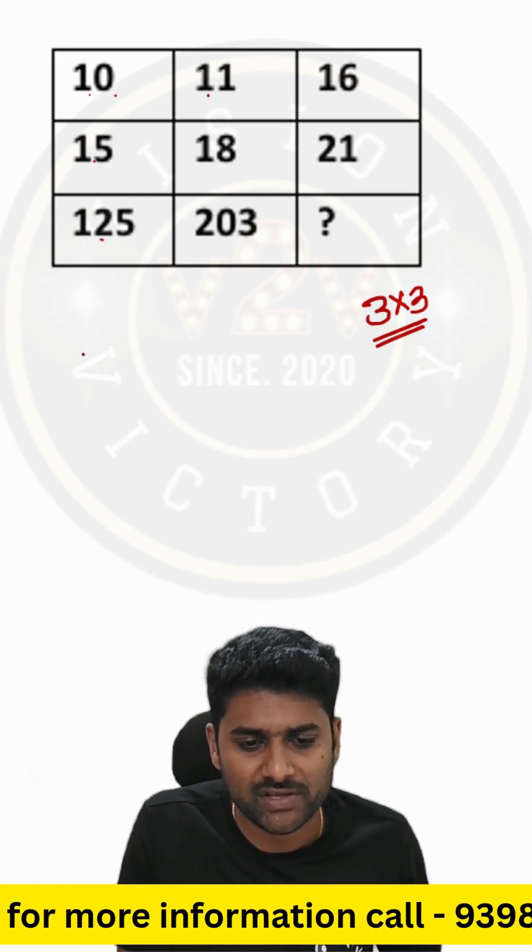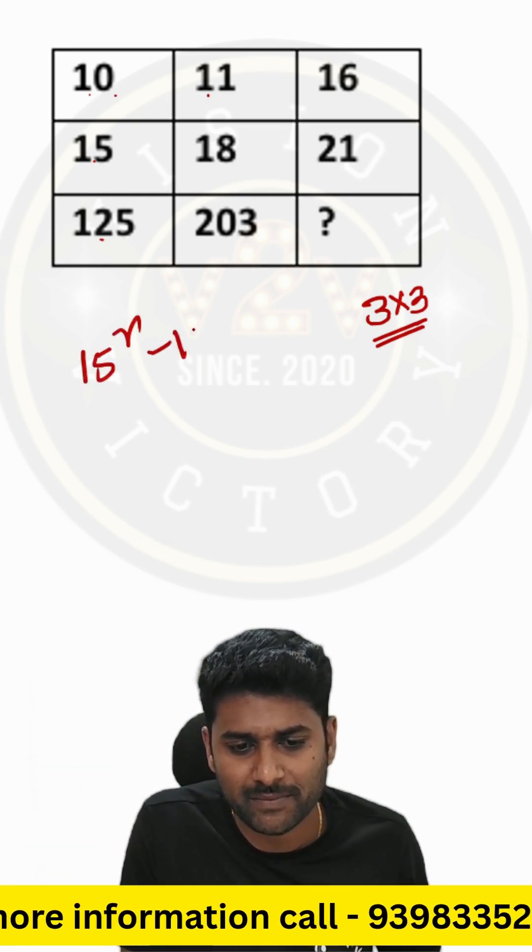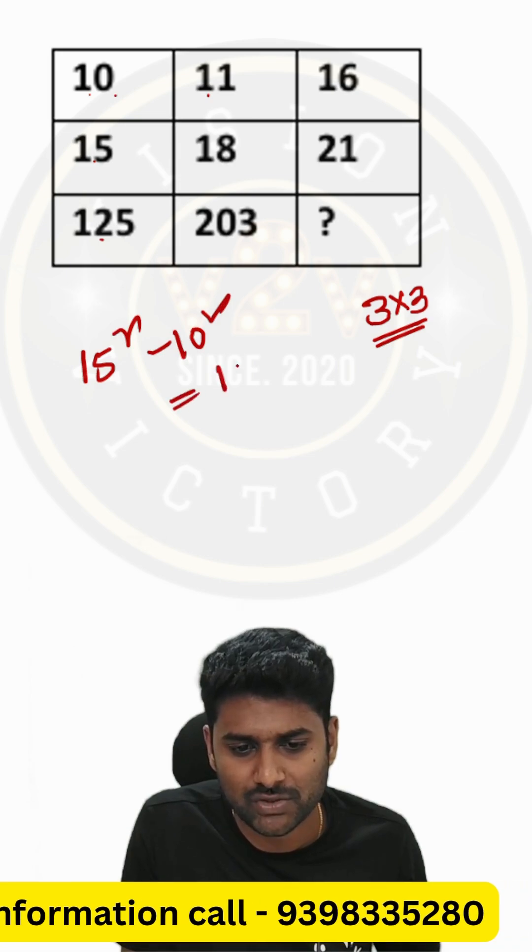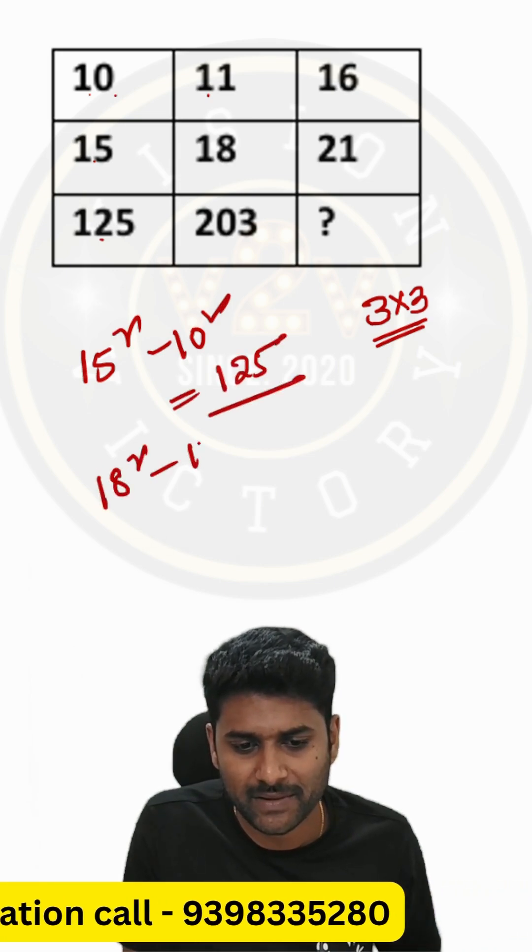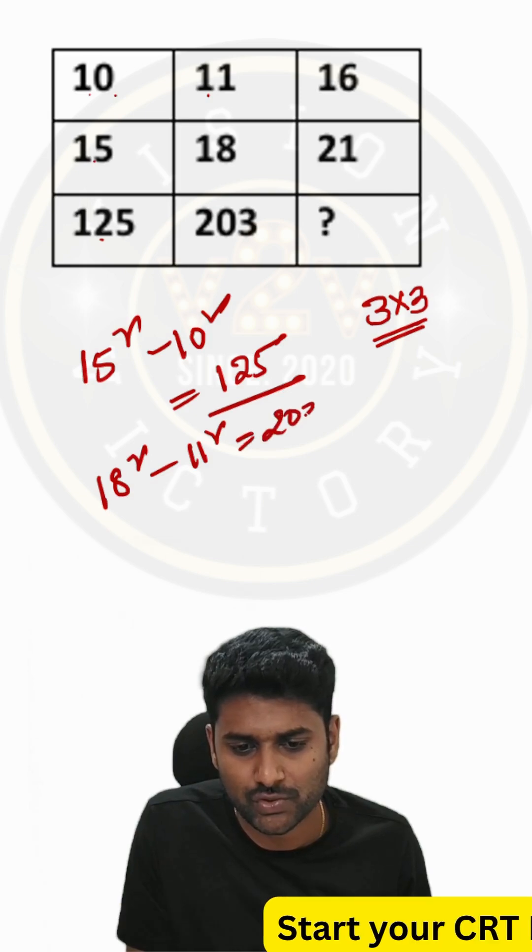For this question, the logic is 15 squared minus 10 squared equals 125. Same way, 18 squared minus 11 squared equals 203.